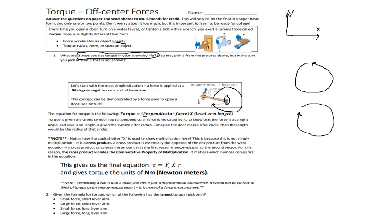Mathematically, torque is equal to the perpendicular force times the lever arm length — the radius. If you imagine the door free to spin about a full circle, the length of the door is the radius. That radius is actually a vector — it starts at the fixed pivot point and moves out the length of the door. Force is a vector, and the radius is also a vector in this case.